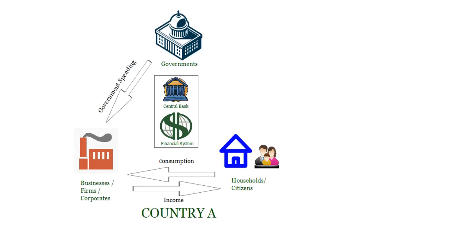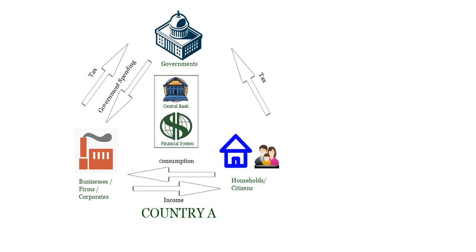The businesses, firms and corporates are producing something which they're selling to the governments and the households, meaning they earn money and make certain profits. The households and citizens also earn income from the services they're providing — the wages they get for the labor they provide. The governments tax these two entities to earn money. Businesses provide corporate tax and other service taxes; households and citizens pay income taxes to the governments. That's how households, citizens, and businesses are linked to the government.